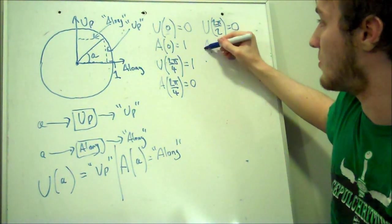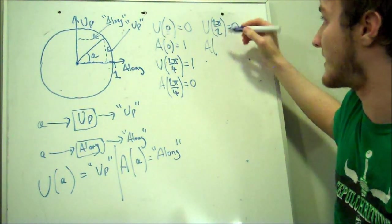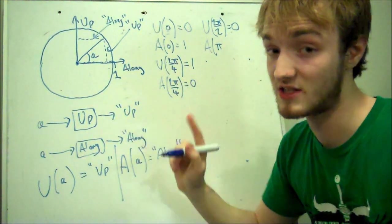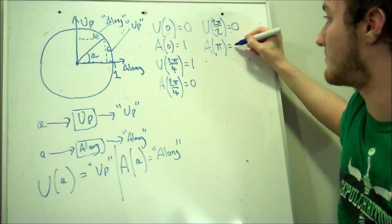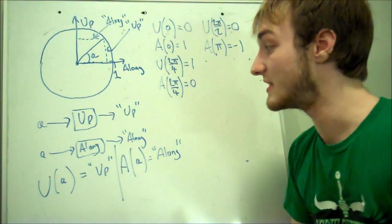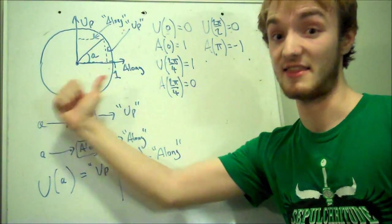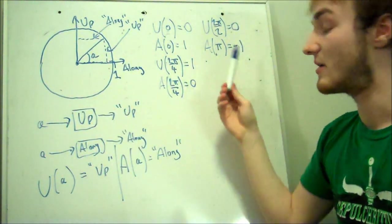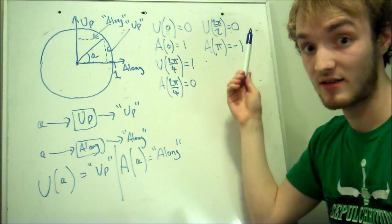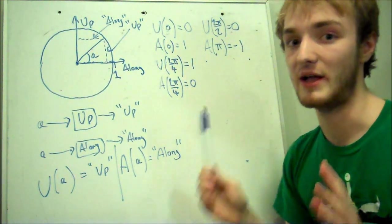If we activate the along machine, and we put in an angle of pi, which is half way around a circle that has two pi radians in it, then it's going to pop out minus one. Remember, the along machine gives us the length of this direction, but if it's going in that direction, it's going to be a negative number. So for up of pi, we get nothing. And for along of pi, we get minus one.